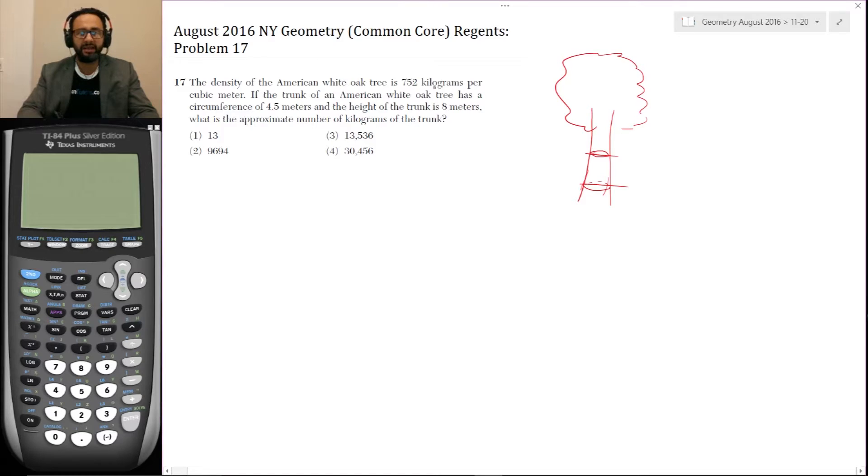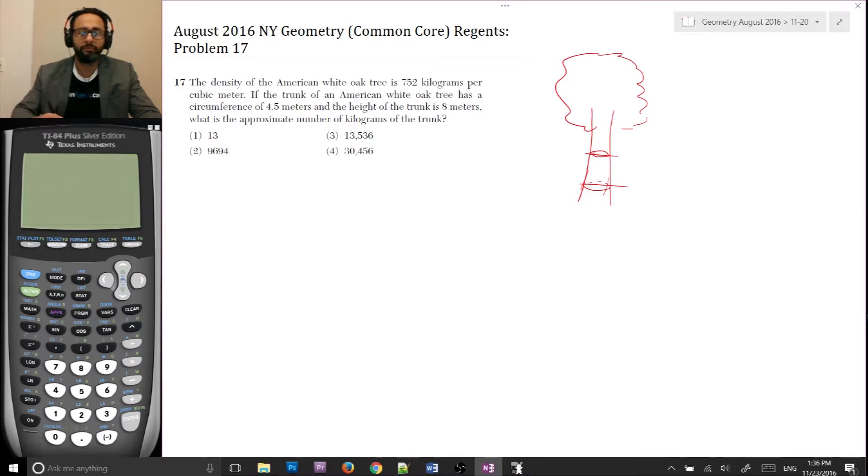Now in this case, they said the circumference is 4.5 meters and the height is 8 meters. So I think they're assuming that it's approximated by a cylinder. So that's what you should definitely assume. Now we want to know what the approximate number of kilograms in the trunk.